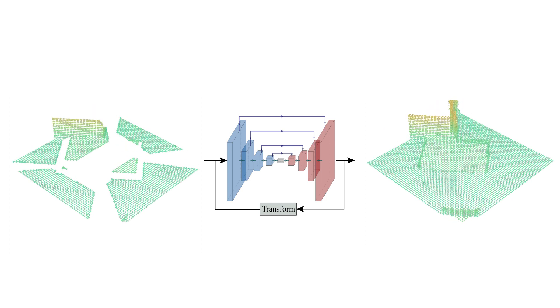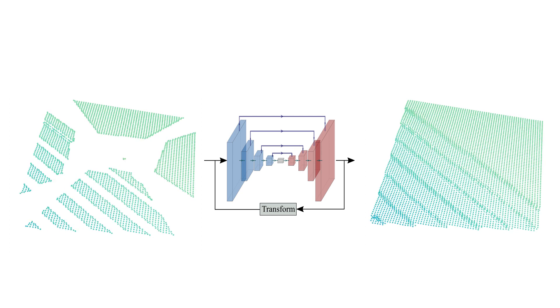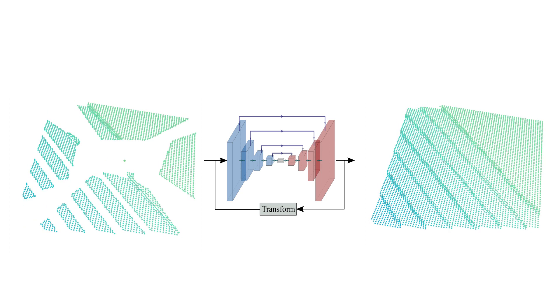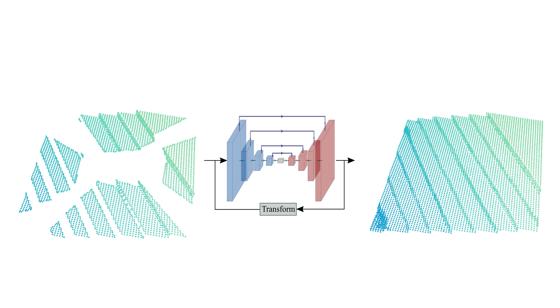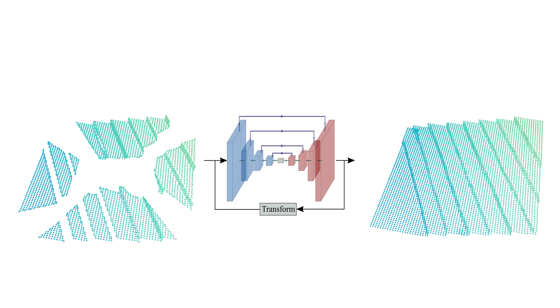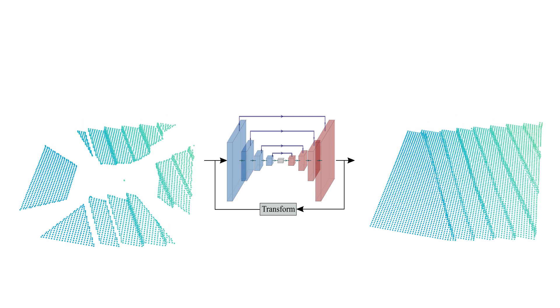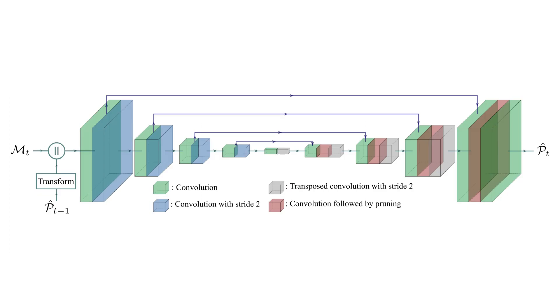This architecture allows the network to learn the geometric priors to complete the scene from the current context. The autoregressive feedback is used to leverage spatiotemporal consistency and use evidence from the past. The network downsamples the input by a factor of 16 and then upsamples the latent tensor back to the original stride.